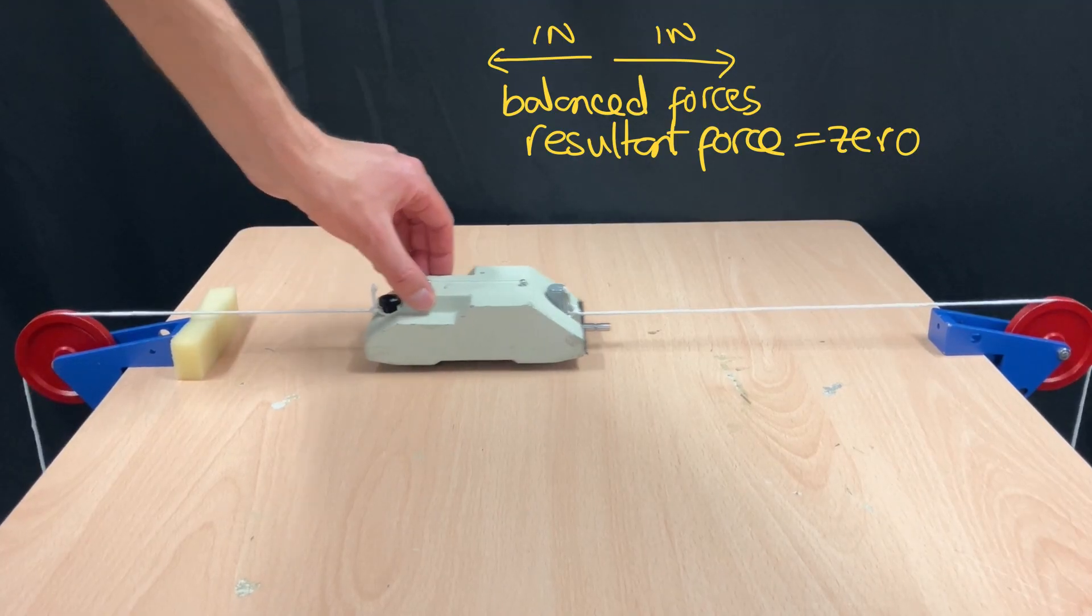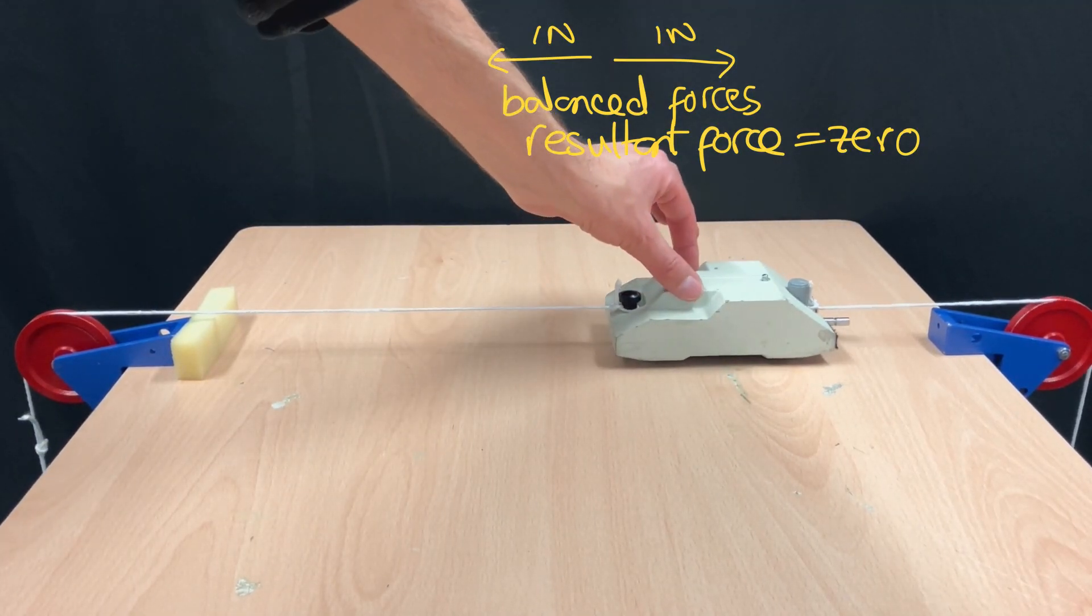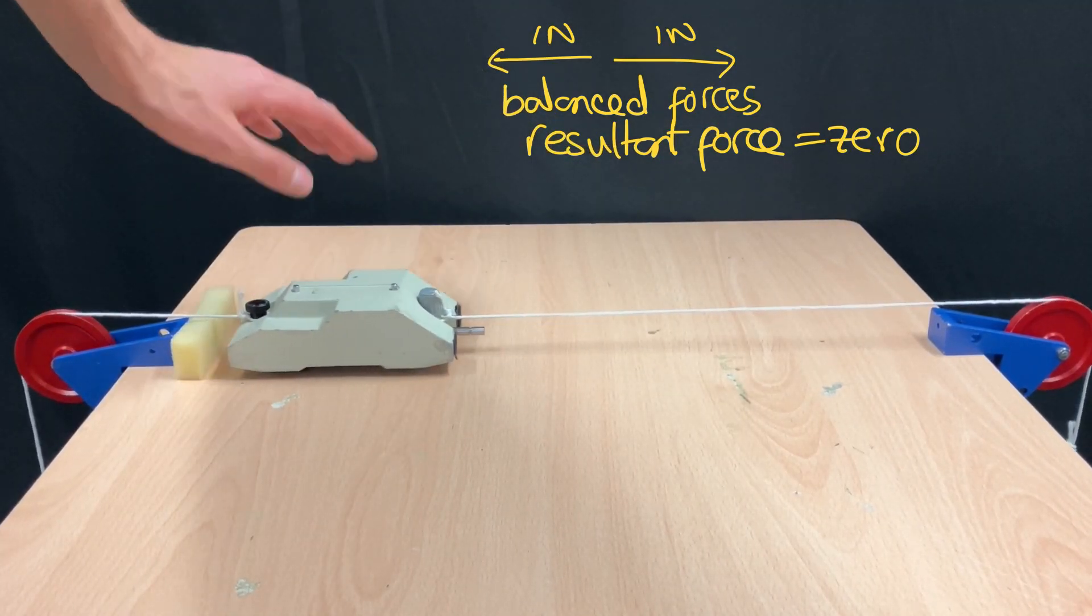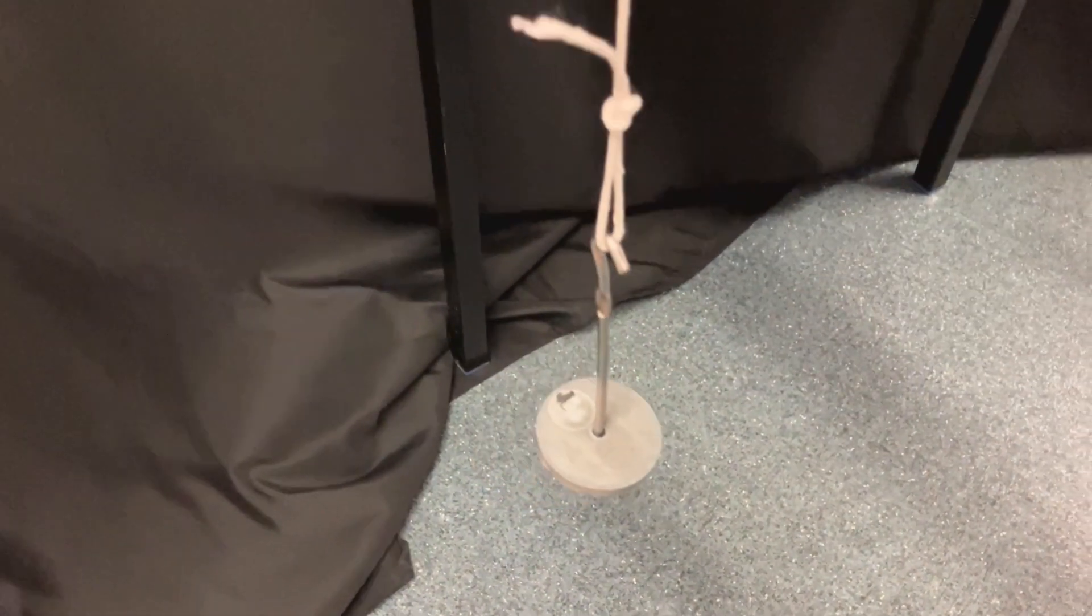But if I launch the trolley so it's moving, it will continue moving at constant speed because there is no unbalanced force to change that until it hits the far end.